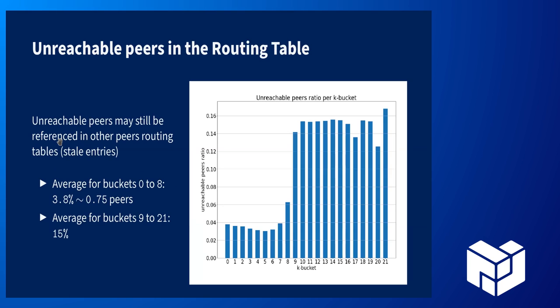The first result we look at is the ratio of peers that are in someone's routing table but are unreachable from the network — essentially stale entries. For buckets 0 to 8, the rate is quite low. These are the buckets that contain 20 peers almost all of the time. On average, out of the 20 peers in the bucket, only 0.75 are unreachable. That's very good, given the high churn rate we observe in IPFS.